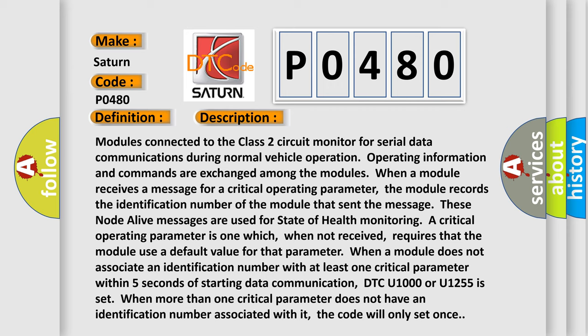When a module receives a message for a critical operating parameter, the module records the identification number of the module that sent the message. These node alive messages are used for state of health monitoring. A critical operating parameter is one which, when not received, requires that the module use a default value for that parameter.